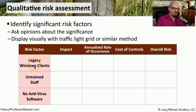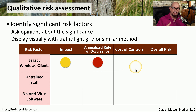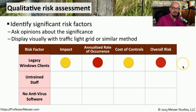We'll start with legacy Windows clients. We may perform an assessment in our organization and find that we have a medium level impact for that particular risk factor. Our annualized rate of occurrence will be marked in red to signify a high value. In this case, we may have a large number of legacy Windows clients that need to be updated. The cost of these controls would be marked as a medium, and the overall risk we can then set to be at the high level with the red marker.